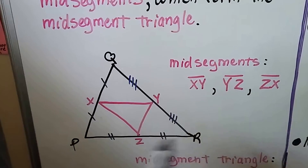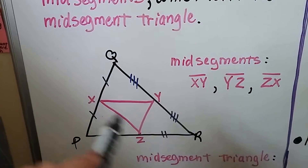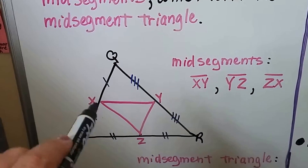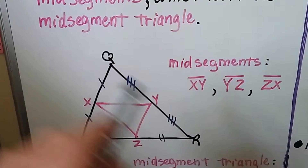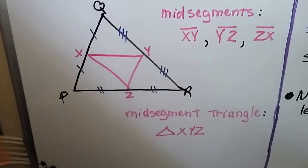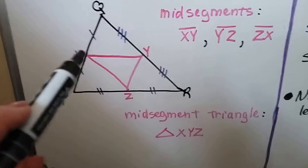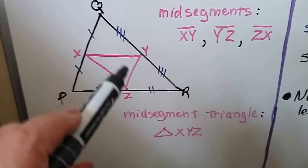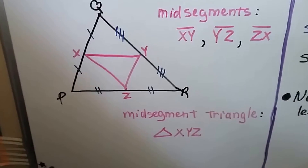XY is parallel to PQ, and XZ is parallel to QR. The mid-segment triangle would be XYZ — it makes this little triangle.